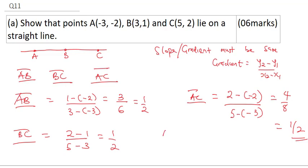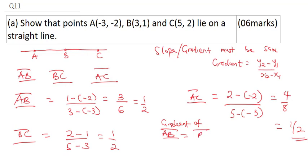Now, you can see that line A, B, the gradient, gradient of line A, B is equal to line B, C is equal to line A, C. Therefore, they are on a straight line. And as easy as that, you are going to get all the 6 marks for this question.